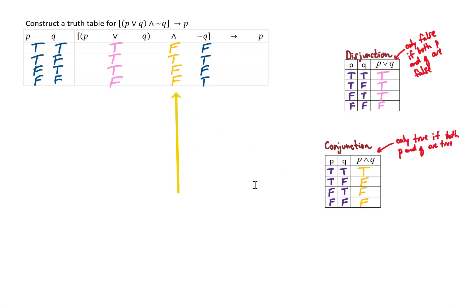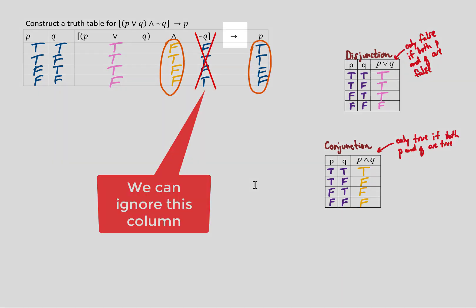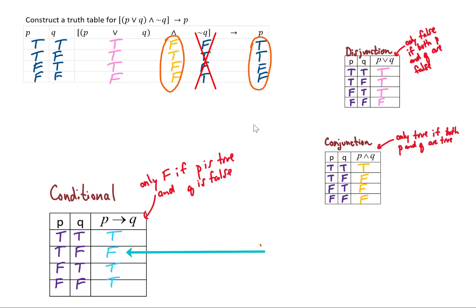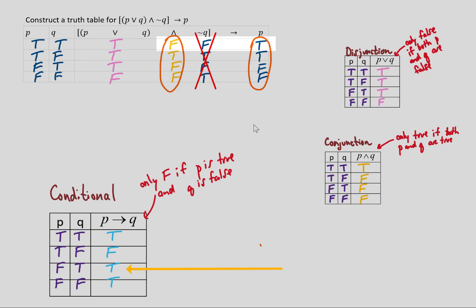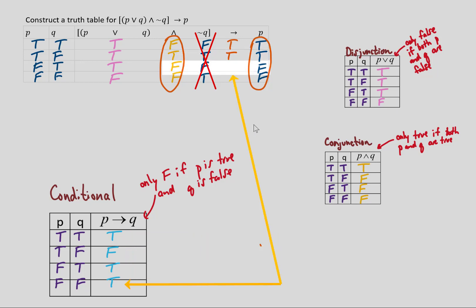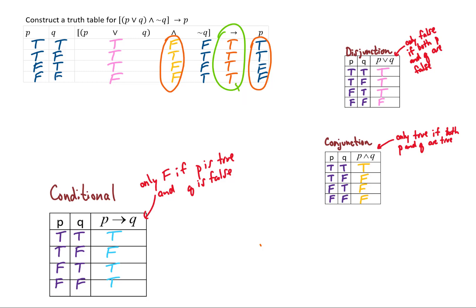Finally, we're going to compare this conjunction column with our P column using a conditional. The conditional rule is that we only get false if the first value is true and the second is false. Comparing: false and true gives true; true and true gives true; false and false gives true; false and false gives true. This is our answer column — we see that we get all trues.